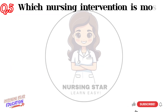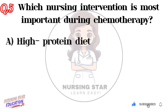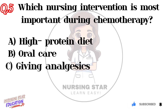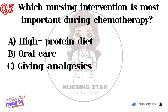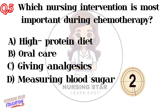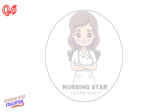Question number five: Which nursing intervention is most important during chemotherapy? Option A: High protein diet. Option B: Oral care. Option C: Giving analgesics. Option D: Measuring blood sugar. Correct answer: B — Oral care.